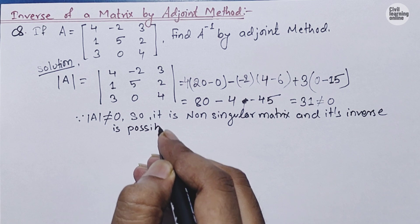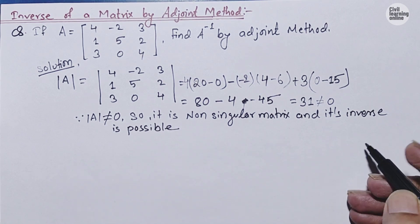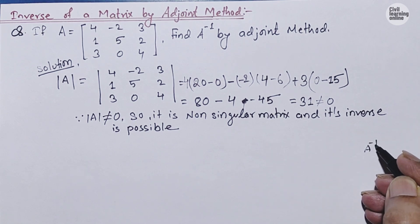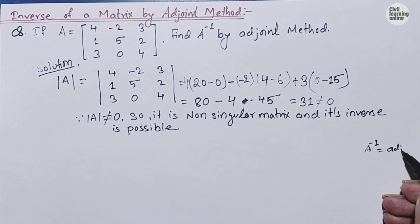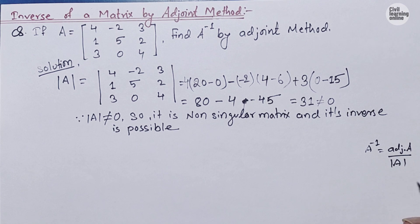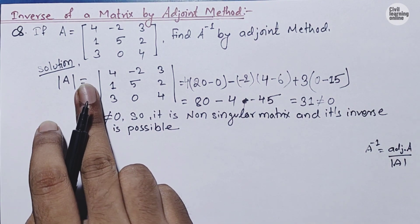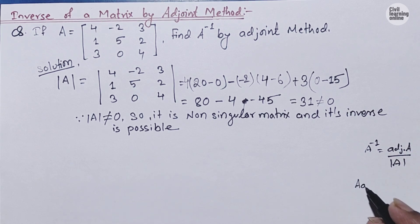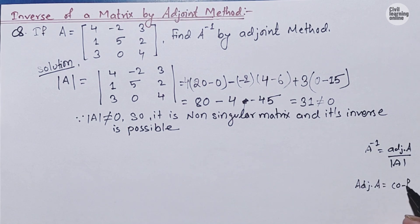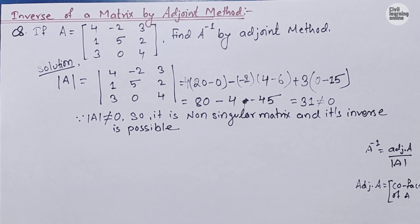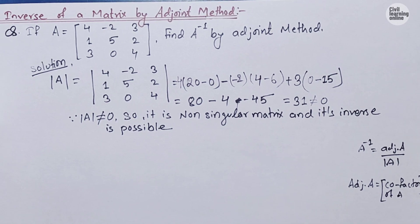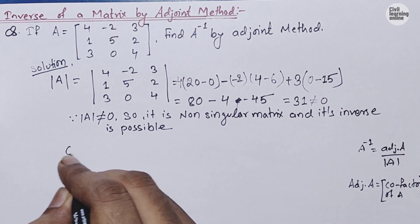As shown in the previous video, the inverse of matrix A is given by: A⁻¹ = adj(A) / det(A). We have already calculated det(A) = 31. Now we need to calculate adj(A). The adjoint of A equals the transpose of the cofactor matrix of A. So first we need to find the cofactor matrix of A.